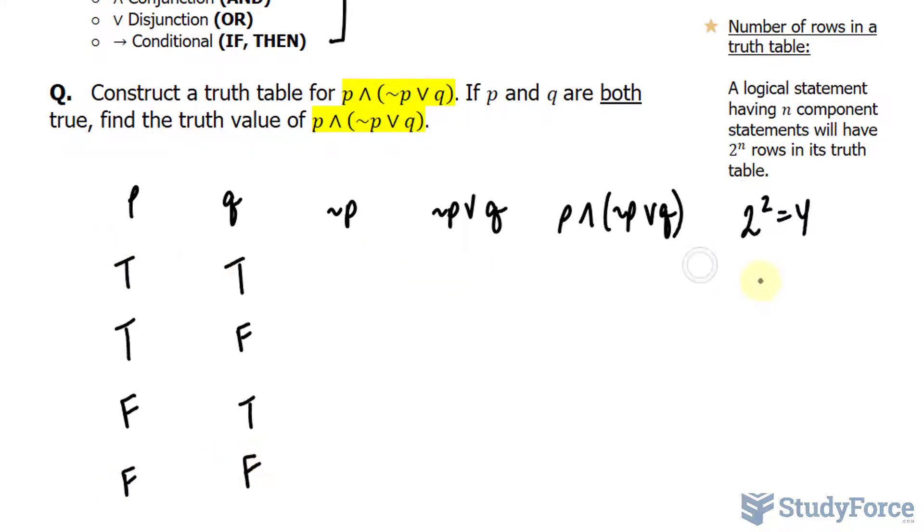Now we know the answer is going to be the first row, because we're told in the question that both p and q are true. At this point, you want to fill in all the empty spots. Let's begin with this column.